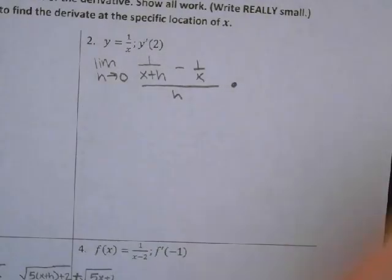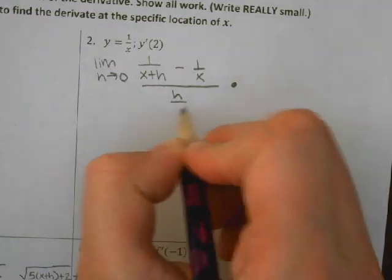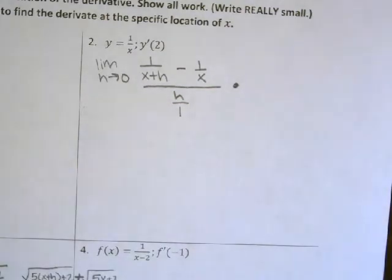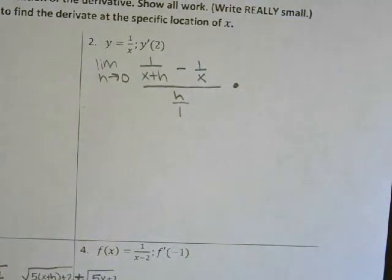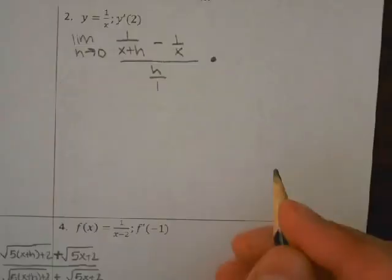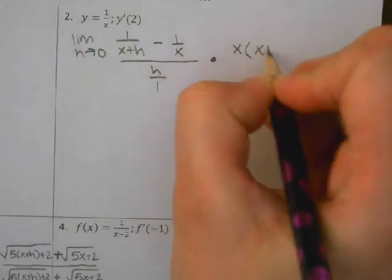And the common denominator is x and (x+h). So this h on the bottom is over a 1, so the denominator of the h doesn't really help us much. But the denominators of the other piece — the x and the (x+h) — that's what we're going to use. So we're going to multiply this by x times (x+h).